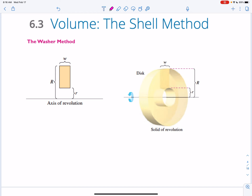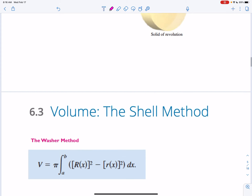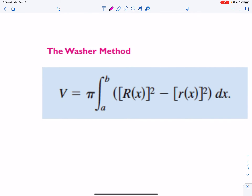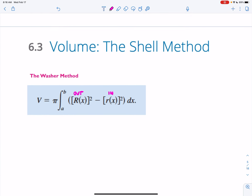If there are gaps between the discs, that creates a hollow area — like a donut. You have to subtract out the volume of the small inner disc. That gives us the washer formula: outside squared minus inside squared, where inside and outside are based on perspective relative to the axis of revolution. A washer is really just a hollowed-out disc.